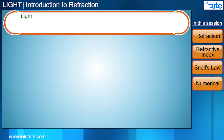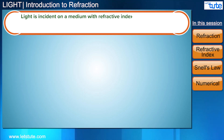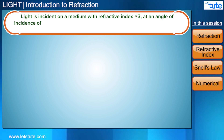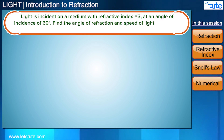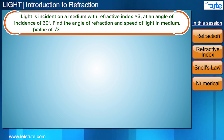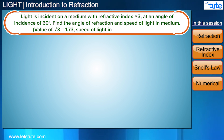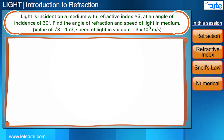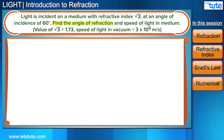Light is incident on a medium with refractive index √3 at an angle of incidence of 60 degrees. Find the angle of refraction and the speed of light in the medium. The value of √3 is 1.73 and the speed of light in vacuum is 3 × 10⁸ meters per second. Let's look at the first part and find the angle of refraction.